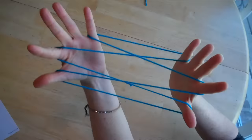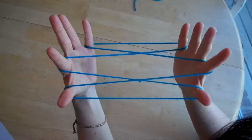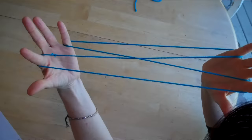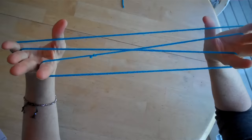Next, drop the thumb strings. Reach underneath with your thumbs and pick up the last string with your thumbs. Pull it forward, just the last string.